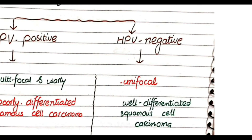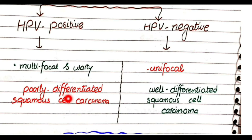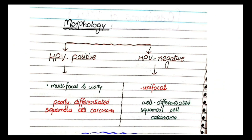Regarding morphology: HPV-positive tumors are multifocal and warty, as infection can cause multiple lesions in the affected area, while HPV-negative tumors are unifocal. Additionally, HPV-positive tumors are poorly differentiated squamous cell carcinomas with aggressive biological behavior, whereas HPV-negative cancers are well-differentiated squamous cell carcinomas that retain squamous cell characteristics. These are the key morphological differences to remember.